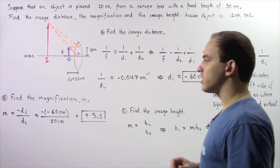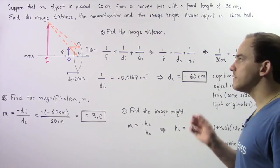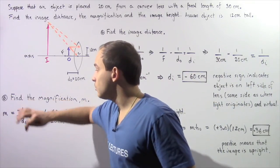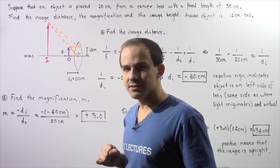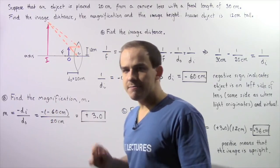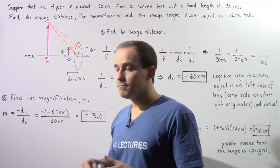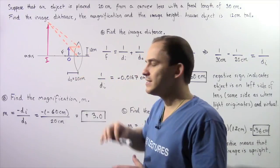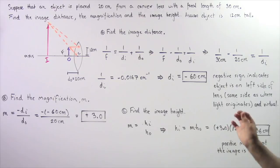Now let's move on to part B: find the magnification M of our lens. To find M, we use the relationship M equals negative of the image distance divided by the object distance. We found the image distance in part A to be negative 60 cm, and the object distance is 20 cm. So M equals negative of negative 60 cm divided by 20 cm, which gives us positive 3.0 as our lateral magnification.